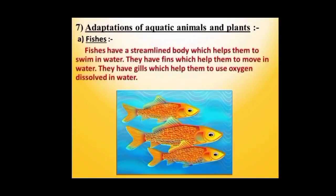This was all about the adaptations of terrestrial habitats. Now let us move towards the adaptation of aquatic animals and plants. Let us first discuss the adaptation of a fish. In the picture, you can see the fish has a streamlined body which helps it to swim in water. Fish also have fins which help them to move in water. They do not have lungs; instead, they have gills as their respiratory organs which help them to use oxygen dissolved in water.